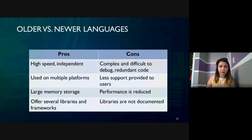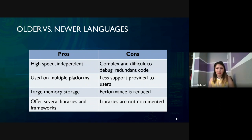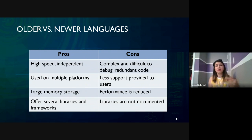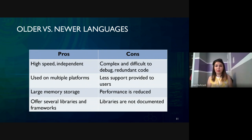Comparing older versus newer programming languages: newer languages sometimes have higher speeds, are independent, can be used across multiple platforms, have large memory storage, and offer several libraries and frameworks. On the other hand, they are complex, have less support, and sometimes have performance issues and library problems. There should be an in-depth look at the type of platform to choose which programming language is most adaptable.